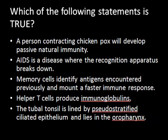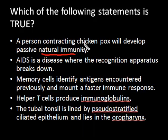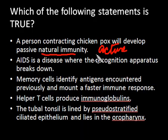Let me go to the last question, which asks you to identify the true statement. It says a person contracting chickenpox will develop passive natural immunity. This is false, because when you get a disease, that is natural immunity, which is correct. But when you get a disease, the body begins to produce antibodies, so that is active immunity. This is active natural immunity, so this statement is false.